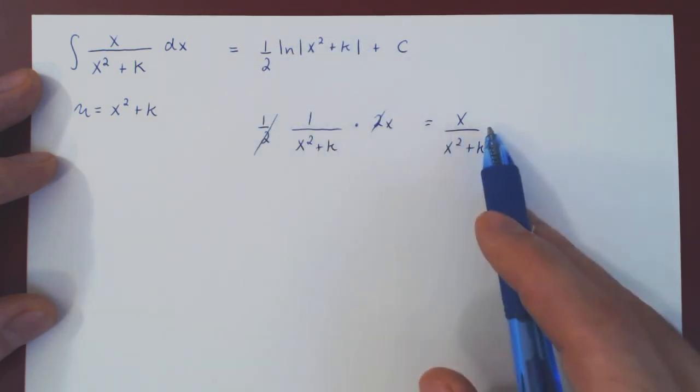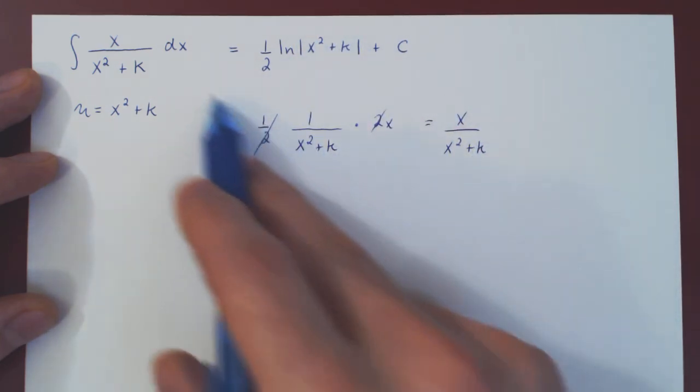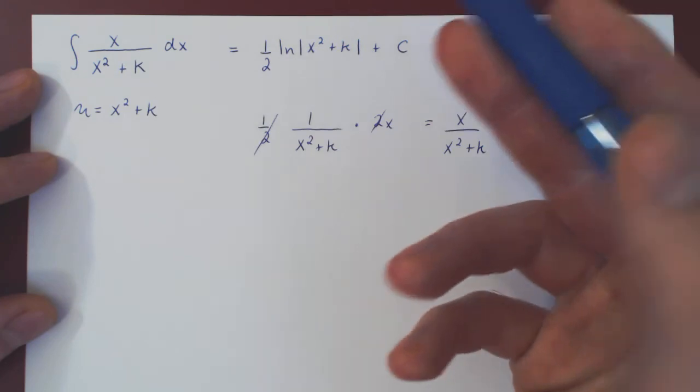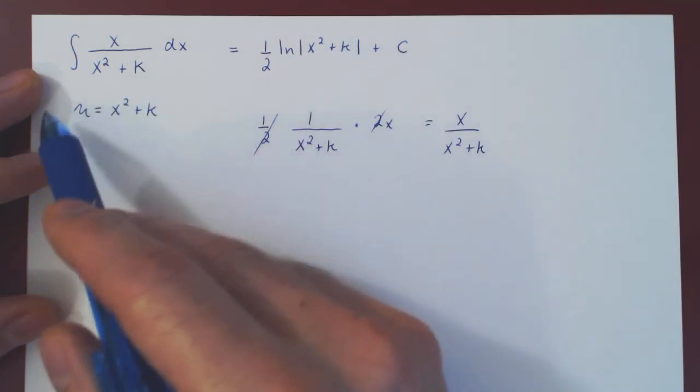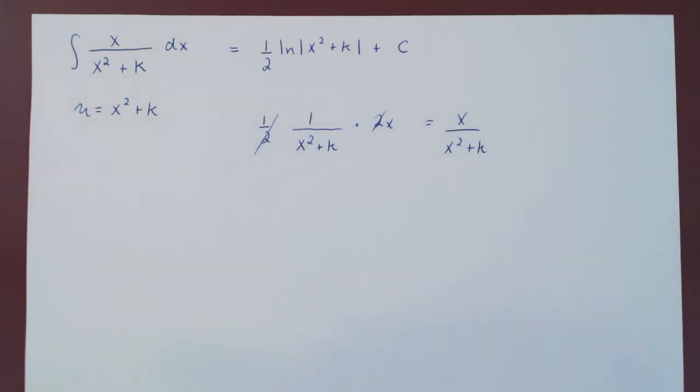just differentiate it and check that you get the original function. Or, worst case, perform the u substitution again, but I will not require you to do so. And that's it.